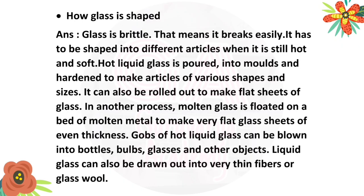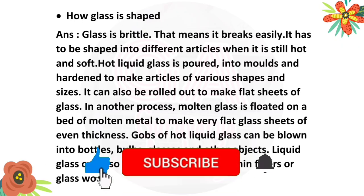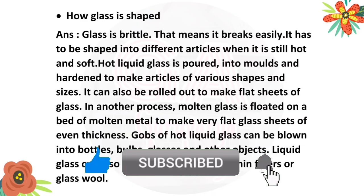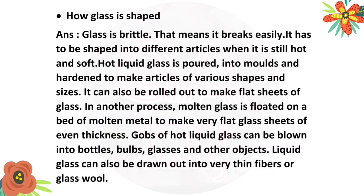Second: How is glass shaped? Glass is brittle — that means it breaks easily. It has to be shaped into different articles when it is still hot and soft. Hot liquid glass is poured into molds and hardened. It can also be rolled out to make flat sheets of glass. In another process, molten glass is floated on a bed of molten metal to make very flat glass sheets of even thickness. Blobs of hot liquid glass can be blown into bottles, bulbs, glasses and other objects. Liquid glass can also be drawn out into very thin fibers or glass wool.